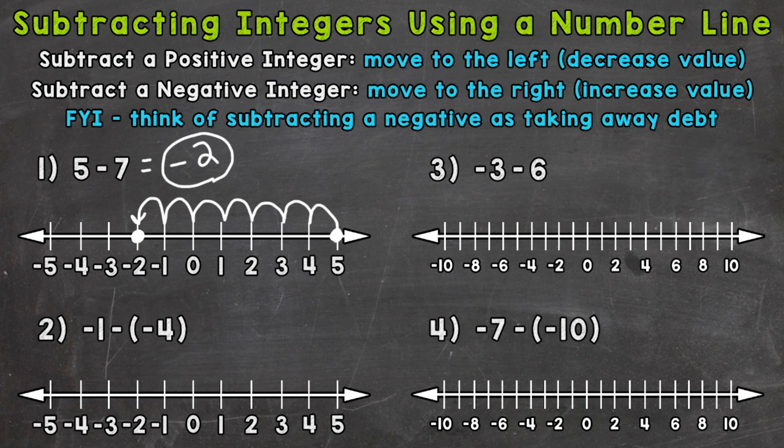On to number two, where we have negative one minus negative four. We are subtracting a negative integer, so we're actually going to move to the right. We are going to be increasing in value. Remember, think of this as taking away a negative number as taking away a debt. We'll start at negative one.